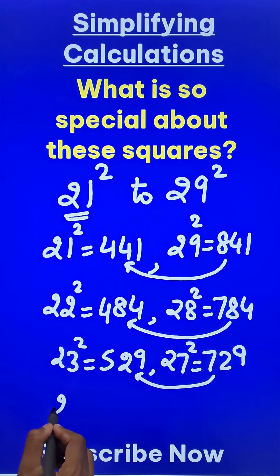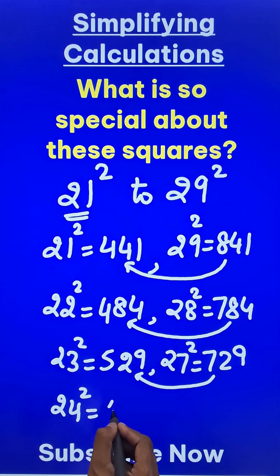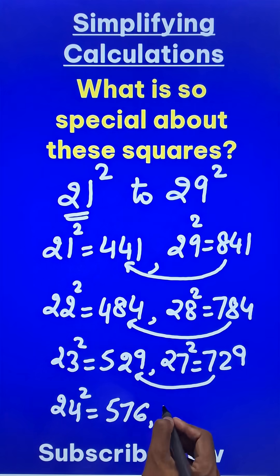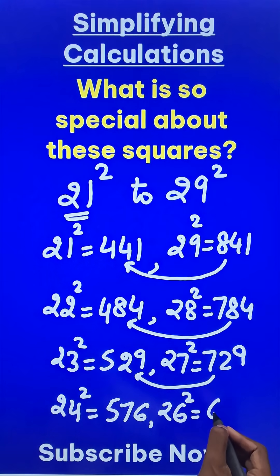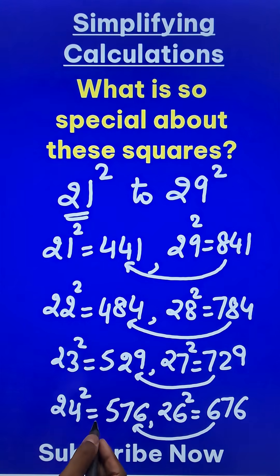What more? We have another one. 24 square is 576, and what about 26 square? It is 676. They are exactly 100 apart.